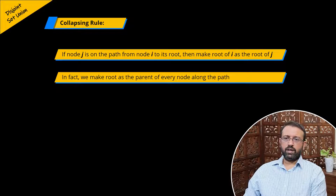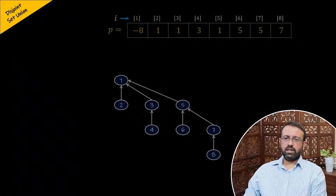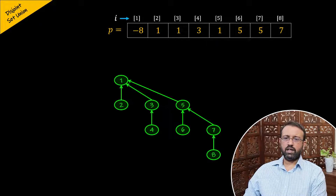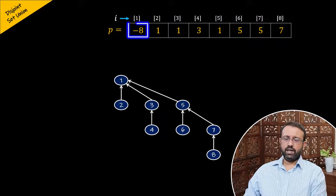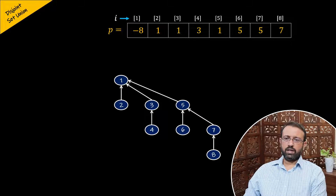To demonstrate the find operation using the collapsing rule, we will consider a disjoint set with eight elements represented as a tree with node one as the root. The nodes of the tree are stored in array p. Negative eight is stored at index one — the negative sign indicates it is the root, and eight is the count of nodes in the tree. The rest of the values in array p are the parents of the nodes.